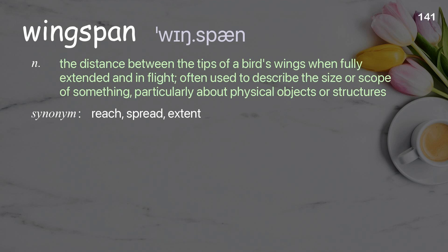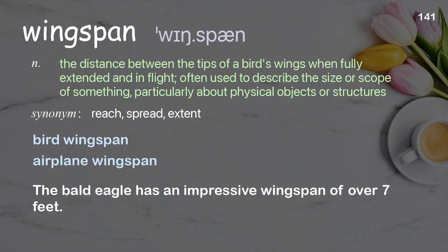Wingspan: the distance between the tips of a bird's wings when fully extended and in flight; often used to describe the size or scope of something. Examples: bird wingspan, airplane wingspan. The bald eagle has an impressive wingspan of over 7 feet.